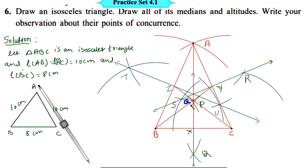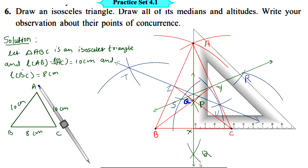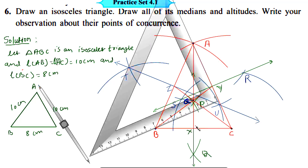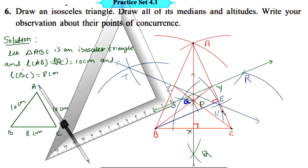Then we draw the altitudes of triangle ABC with the help of a set square. Put the set square with one side along side BC and the other side on vertex A. Draw the perpendicular from vertex A to opposite side BC. To draw the altitude from vertex B to opposite side AC, put the set square along side AC and the other side of the set square on point B. Draw the perpendicular from vertex B to opposite side AC. This foot is point E. Therefore, segment BE is the altitude of triangle ABC. Also, segment AF is also an altitude of triangle ABC.